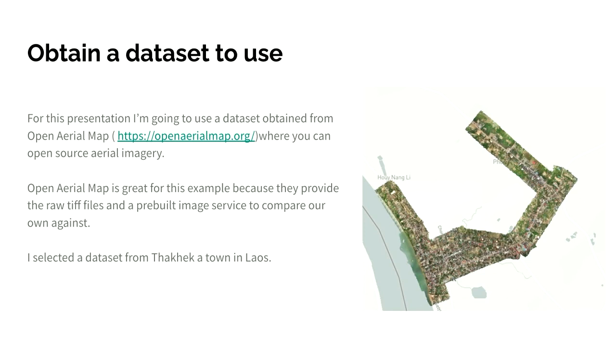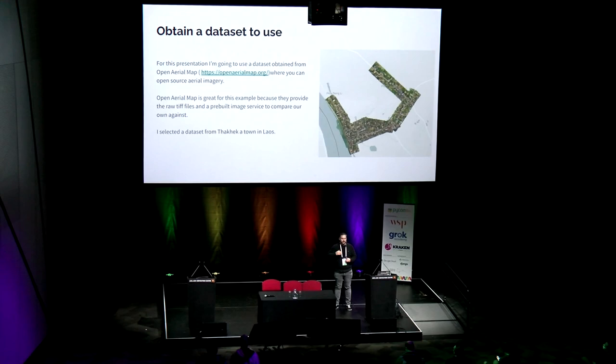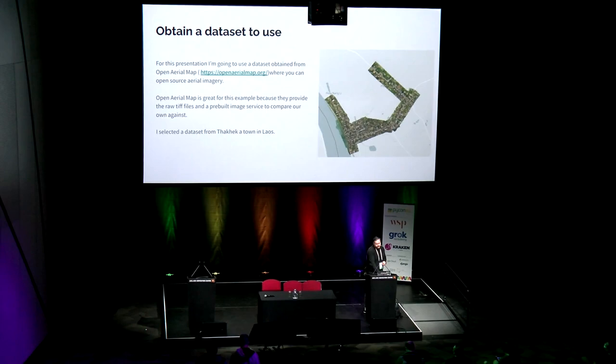For this example, I'm using a dataset I obtained from Open Aerial Map. Open Aerial Map is a great open source repository of aerial imagery where you can download imagery that other people have put online. It provides raw GeoTIFFs that are prebuilt and that you can download and test. If you wanted to try out some geospatial tools, it gives you access to open imagery to work with. For this particular example, I'm using a town in Laos.